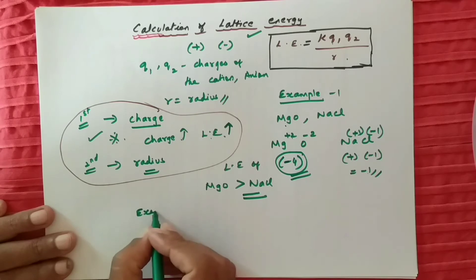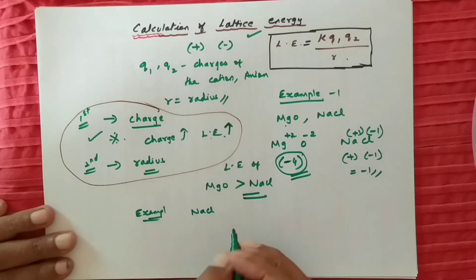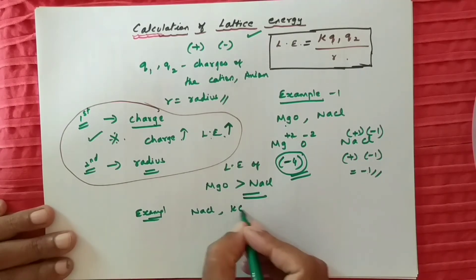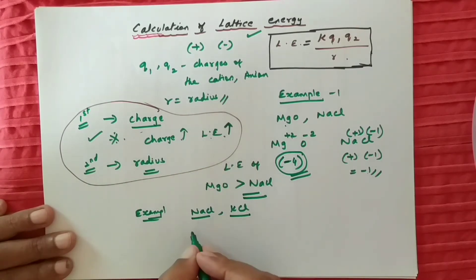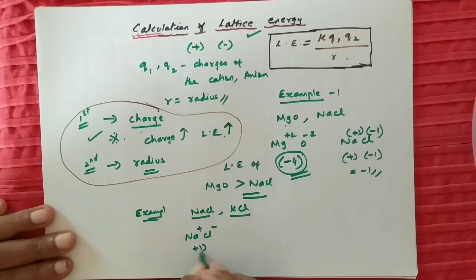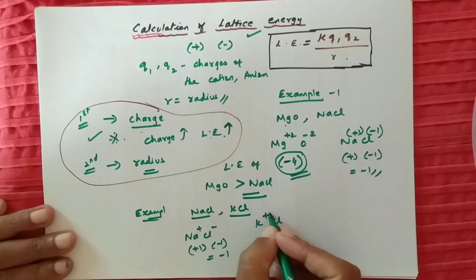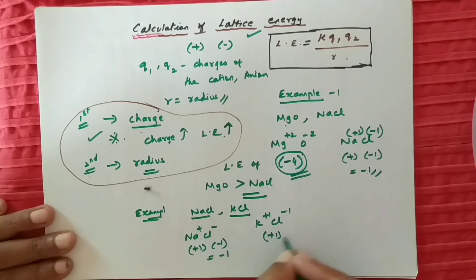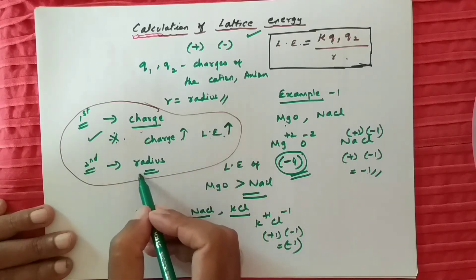Example 2: comparing NaCl and KCl. In NaCl, Na is +1 and Cl is −1, so the product of charges is +1 × −1 = −1. Same thing in KCl — potassium charge is +1 and Cl is −1, so again +1 × −1 = −1. Both have the same product of charges, so we have to go by the second option, which is radius.